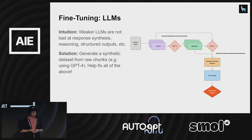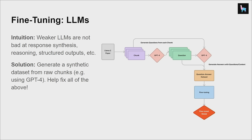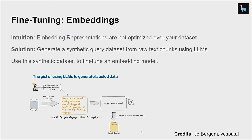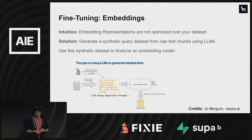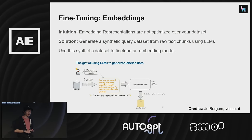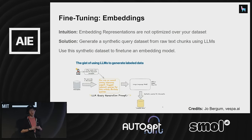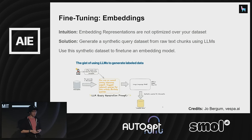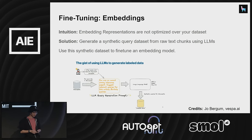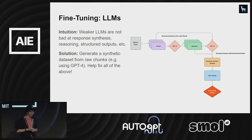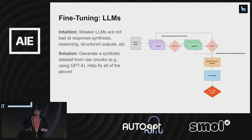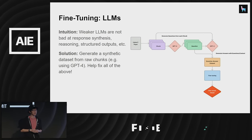You can do this by fine-tuning the base model itself, or fine-tuning an adapter on top of the model. Fine-tuning an adapter has a few advantages: you don't require the base model's weights to actually fine-tune, and if you just fine-tune the query encoder, you don't have to re-index your entire document corpus. There's also fine-tuning LLMs, which a lot of people are very interested in doing these days.